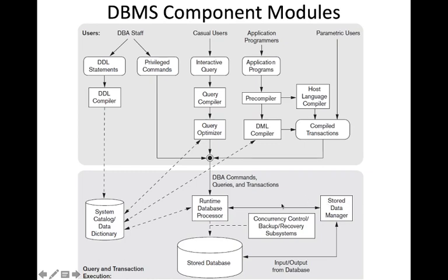The runtime database processor interacts with the stored data manager to get data from the stored database, and also interacts with the operating system to read from or write to secondary storage. There is another module for concurrency control, since different concurrent users access the same database. There are also modules for backup and system recovery from failures. All these modules are part of the lower portion of the DBMS software.